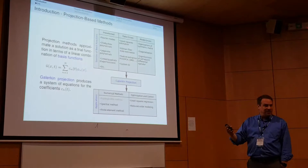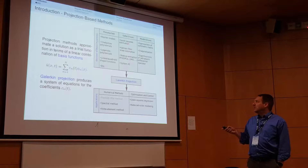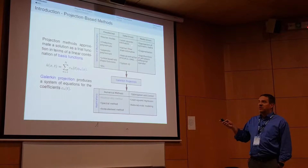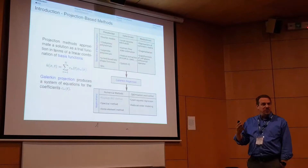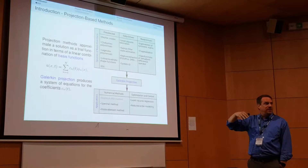In finite element methods, we have pre-selected shape functions. There has been a lot of emphasis recently on data-driven approaches. The classical approach would be least squares regression. A more sophisticated option is reduced order modeling, where we use feature extraction methods such as POD — proper orthogonal decomposition — or similar methods to extract the basis functions from the data itself.